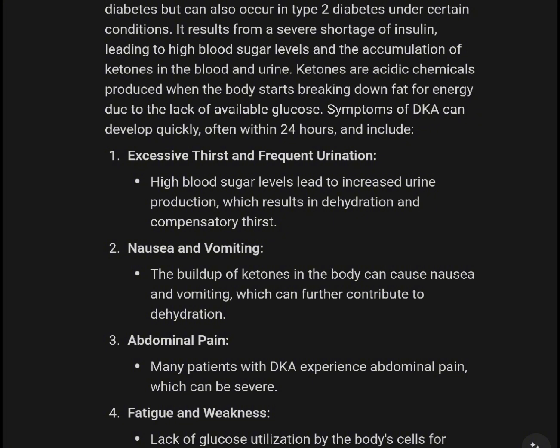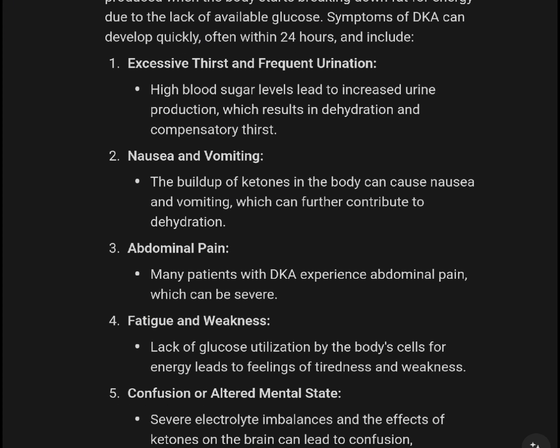High blood sugar levels lead to increased urine production, which results in dehydration and compensatory thirst. Nausea and vomiting: the build-up of ketones in the body can cause nausea and vomiting, which can further contribute to dehydration.